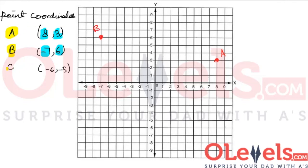Now let's plot the last point, point C. Point C has an x value of minus 6 and a y value of minus 5. This is minus 6 on the x-axis and this is minus 5 on the y-axis. So right here is where point C will be. Let's plot and label it point C. We were able to pinpoint the exact location of the points given just their coordinates.